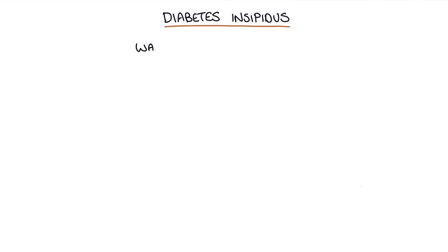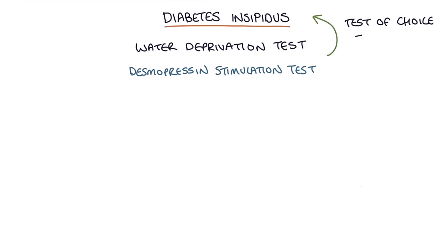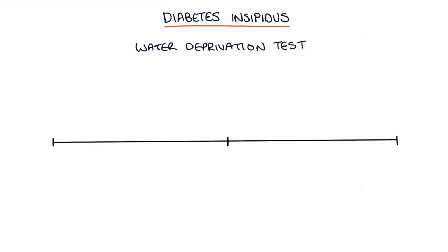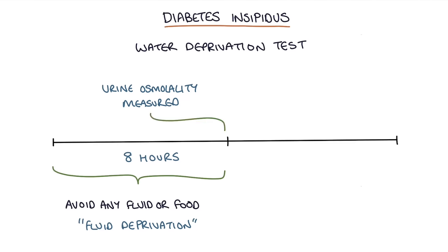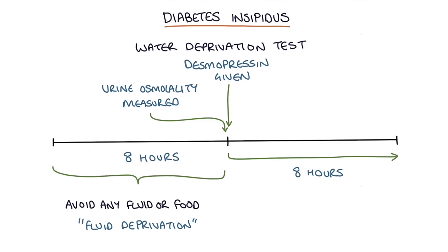The next test is called a water deprivation test, also known as the desmopressin stimulation test, and this is the test of choice for diagnosing diabetes insipidus. Firstly, the patient needs to avoid taking any fluids or food for eight hours prior to the test — this is referred to as fluid deprivation. Then the urine osmolality is measured and synthetic ADH, or desmopressin, is given. Eight hours later the urine osmolality is measured again.